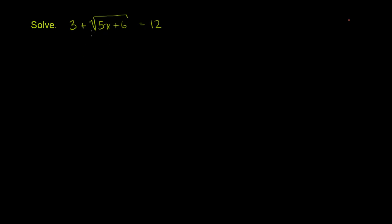So the first thing I want to do is isolate this on one side of the equation. The best way to isolate that is to get rid of this 3. And the best way to get rid of the 3 is to subtract 3 from the left-hand side. And of course, if I do it on the left-hand side, I also have to do it on the right-hand side. Otherwise, I would lose the ability to say that they're equal. And so the left-hand side right over here simplifies to the principal square root of 5x plus 6, and this is equal to 12 minus 3, which is equal to 9.